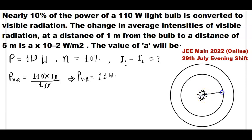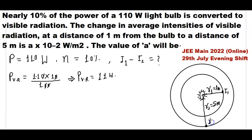The distance r1 is given as 1 meter, and the intensity at that point is I1. The distance r2 is given as 5 meters, and the intensity at that surface point is I2. We know that the intensity of electromagnetic waves is given by the formula involving the power divided by 4π r squared.